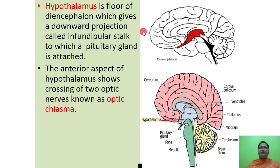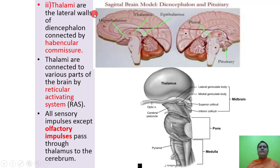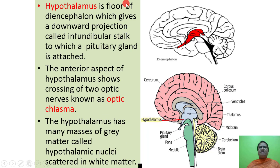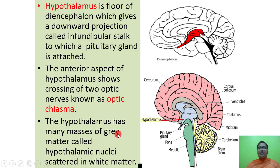The hypothalamus is the floor of the diencephalon, which gives a downward projection called the infundibular stalk, to which the pituitary gland is attached. The anterior aspect of the hypothalamus shows the crossing of two optic nerves, called the optic chiasma. Many masses of gray matter, called hypothalamic nuclei, are scattered in the white matter of the hypothalamus.